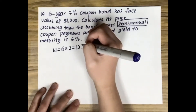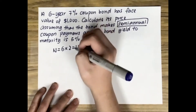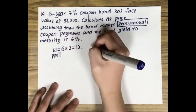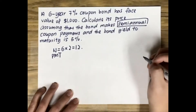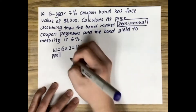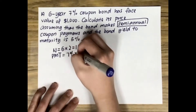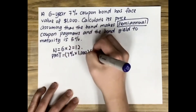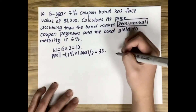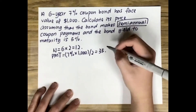The question tells us that this bond pays a 7% semi-annual coupon. If this were an annual coupon bond, we would calculate PMT as 7% times $1,000, which gives us $70. But since this is a semi-annual coupon bond, we divide the coupon payment by 2. So PMT equals 7% times $1,000 divided by 2, which gives us $35 — meaning this bond will pay us $35 every half year.